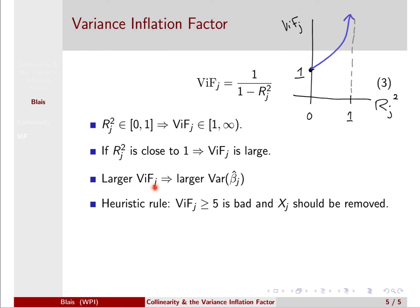And the larger the variance inflation factor, hence the name, the larger the variance of that beta j-hat, which is the coefficient in the multilinear regression original model associated with this predictor Xj.